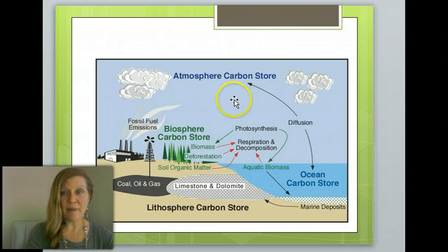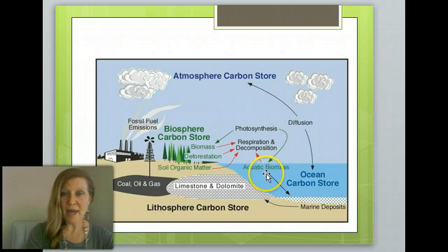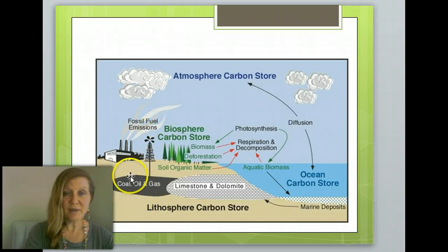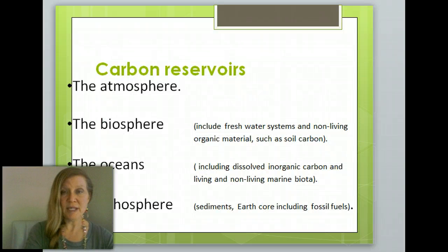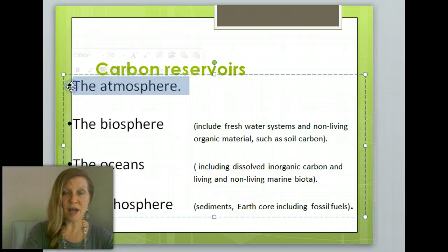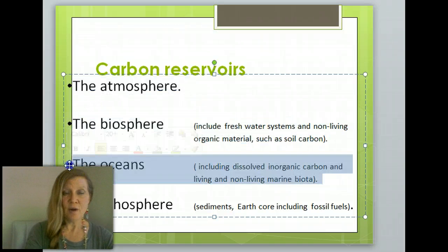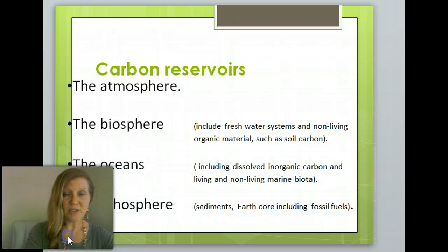These diagrams show how atmospheric carbon is stored in aquatic biomass, in the lithosphere, through fossil fuel emissions, through the biosphere, stored in the ocean, and through marine deposits — all ways that carbon is sequestered and transferred through the biospheres. The carbon reserves are found in Earth's atmosphere, biosphere, oceans, lithosphere, and also in gaseous form in our cryosphere.